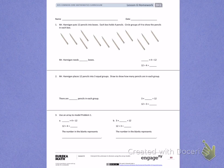This is Module 1, Lesson 6. Today's objective is to interpret the unknown in division using the array model.